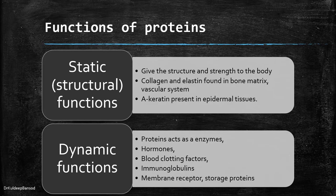These proteins perform two types of functions in the body: static function and dynamic function. In the static function, they give structure and strength to the body. Collagen and elastin found in the bone matrix give toughness to the bone. Alpha-keratin, present in the epidermal tissue, makes skin tougher. Apart from these, proteins also perform dynamic functions — some proteins act as enzymes that catalyze biochemical reactions in the body. Some proteins are hormones like growth hormone, glucagon, and insulin, which perform their functions inside the body.